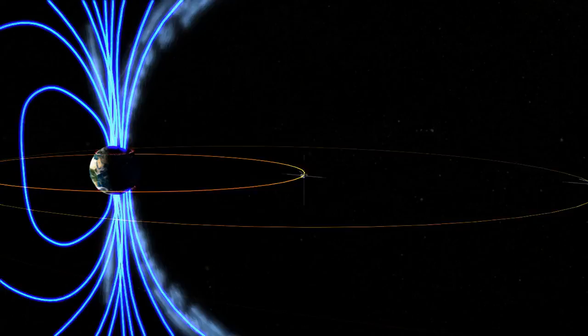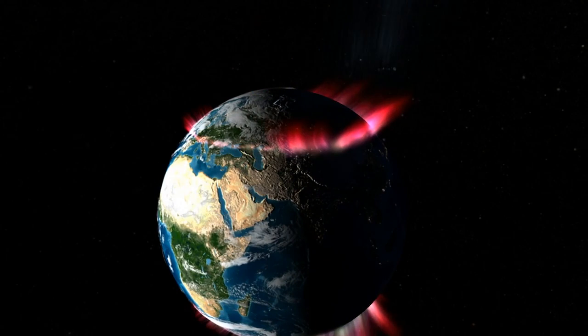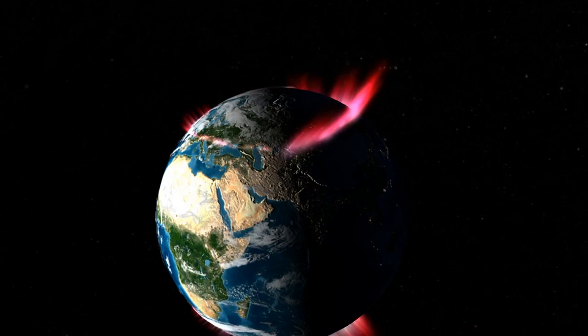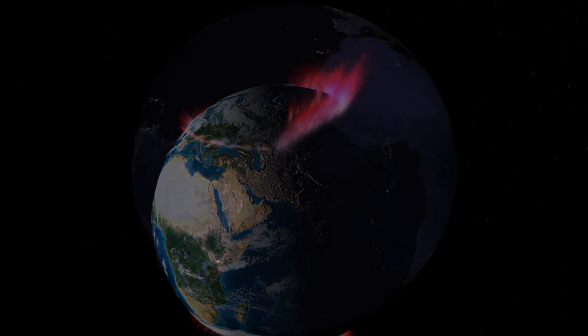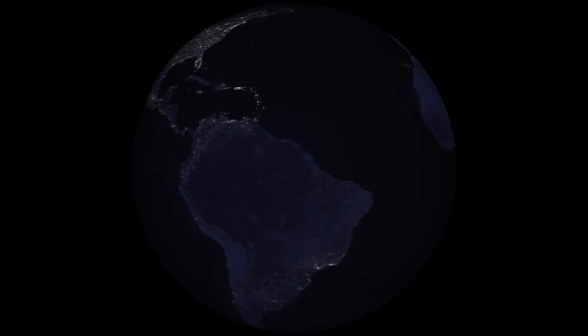A powerful X-class flare like that can create long-lasting radiation storms, which can harm satellites, and even give airline passengers flying near the poles small radiation doses. X-flares also have the potential to create global transmission problems and worldwide blackouts.